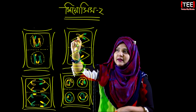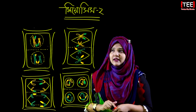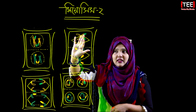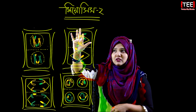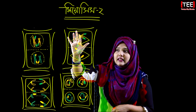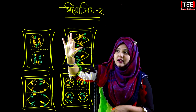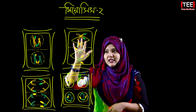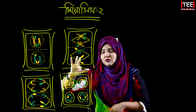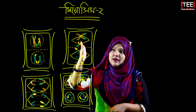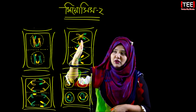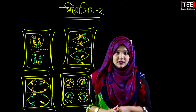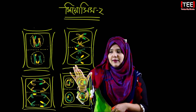The spindle fibers attach to the centromere of each chromosome. The traction fibers pull, and at Metaphase 2 the chromosomes align at the equatorial plate, positioning equally at the spindle equator.